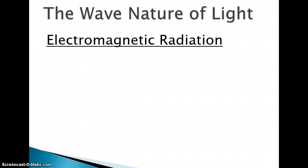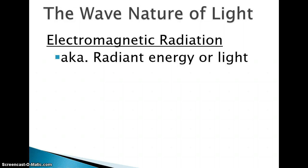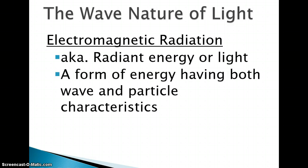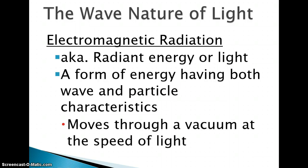The wave nature of light. We're going to start by discussing electromagnetic radiation. This is also known as radiant energy or light. We might also refer to it as heat. A form of energy having both wave and particle characteristics. It moves through a vacuum at the speed of light, and that's going to be a very important relationship when we get to doing some of our calculations.